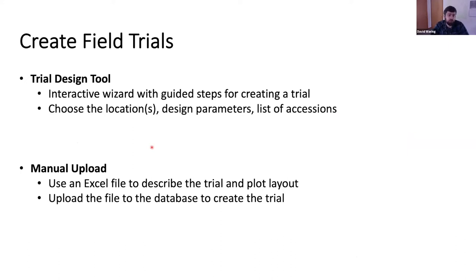The first is creating field trials. The digital ecosystem way is using the trial design tool, which is an interactive wizard on the website with guided steps that help you create a new trial in the database. It has step-by-step instructions to choose a location or multiple locations, creating multiple trials with one run of the tool. You select a design type, choose parameters based on that design type, and then give it a list of accessions or germplasm lines used as entries. There's also an option to manually upload trials using an Excel template that describes the trial and plot layout.